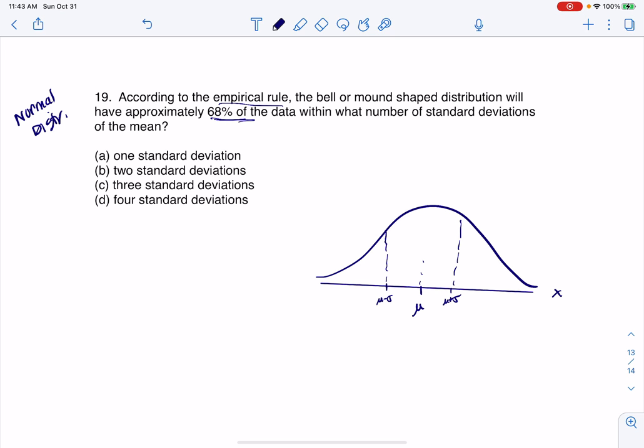Well, from the empirical rule, if you remember, there was 34% on either side of this, and that gave us our total of 68%. So here's our answer.